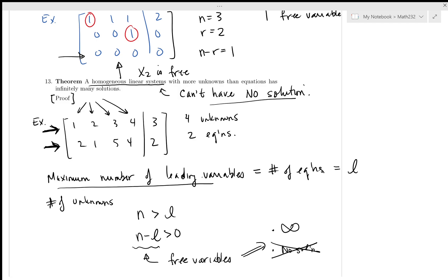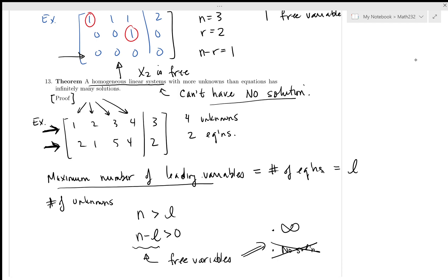The homogeneous system has a couple of wrinkles to keep track of. This really does conclude section 2.2. I'll be posting this shortly. Please watch section 2.3 over the weekend. Bye.